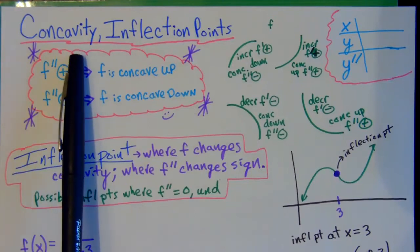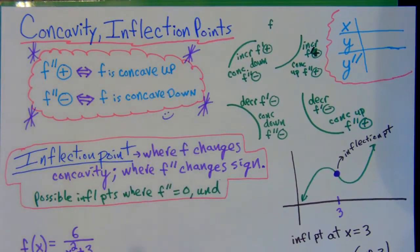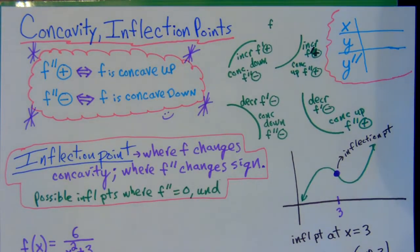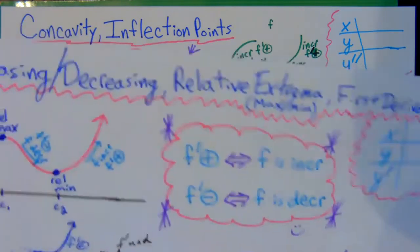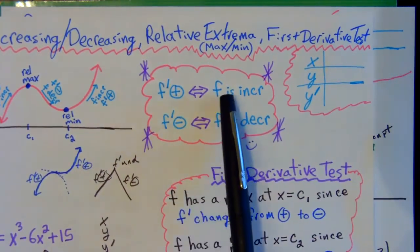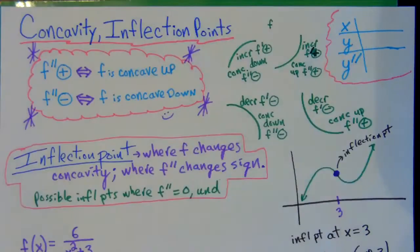We want to figure out whether a graph is concave up or concave down, and find any inflection points. Inflection points are where the graph changes from concave up to concave down or vice versa. To find intervals of concavity and inflection points, we'll use the second derivative and make an x, y, y-double-prime chart. Soon we'll put everything together with increasing/decreasing and relative maximums too.